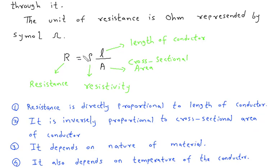From this formula we can see that resistance is directly proportional to length of conductor and inversely proportional to cross sectional area of conductor. Resistance also depends on nature of material.